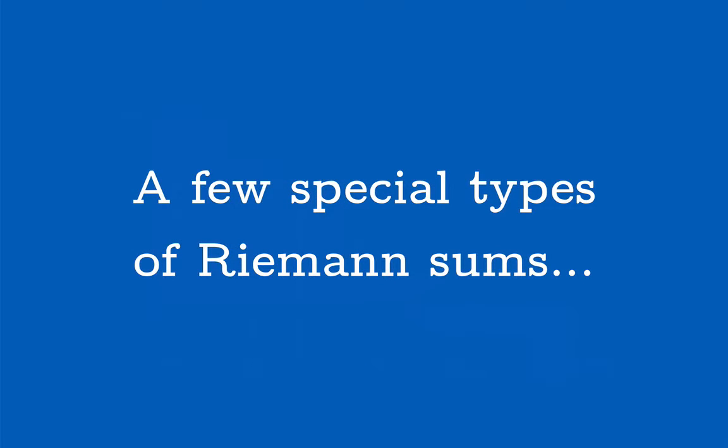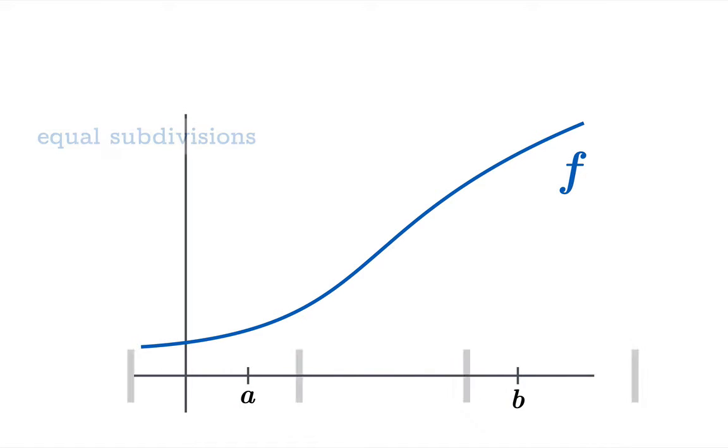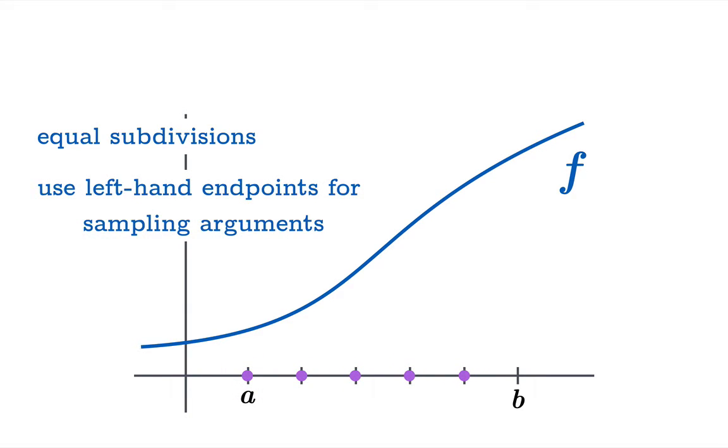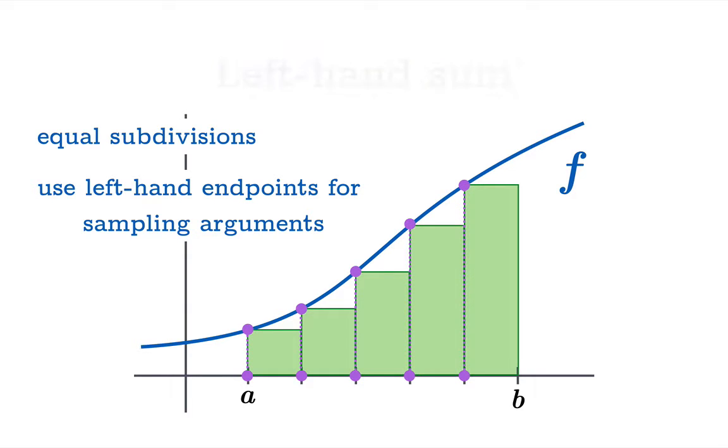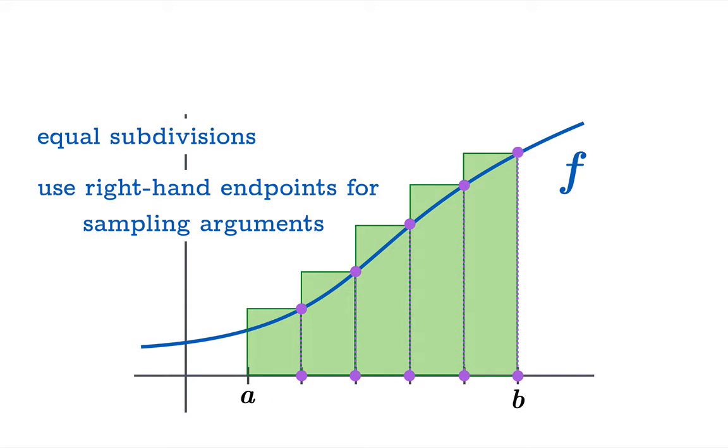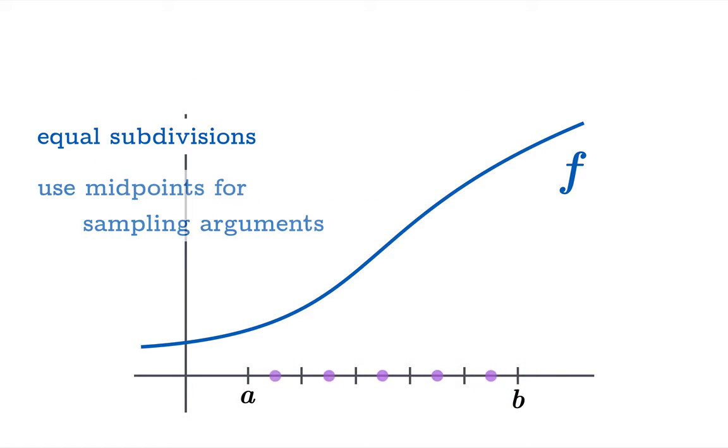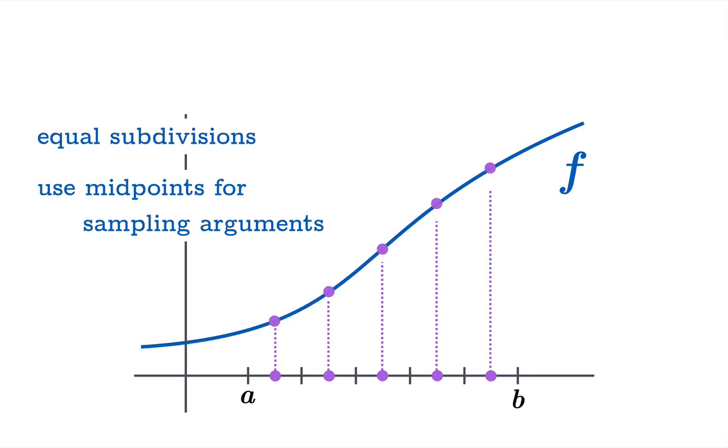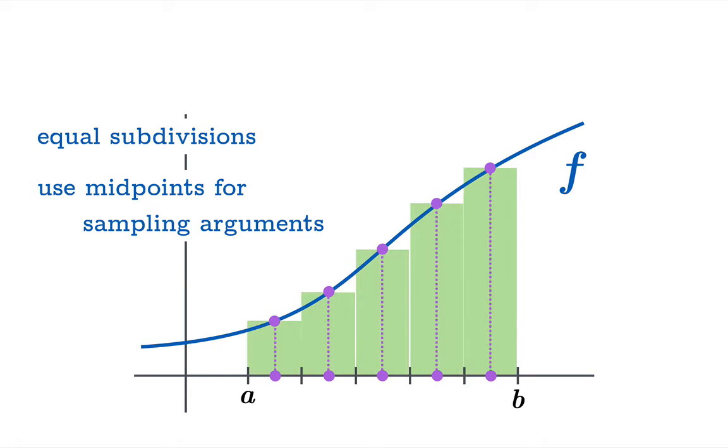Now there are a few special types of Riemann sums that you see all the time. If you use equal subdivisions and you use sampling arguments that come from the left-hand side of each interval then you get a so-called left-hand sum. And using equal subdivisions and choosing the right-hand endpoints as your sampling arguments gives you, not surprisingly, a right-hand sum. And of course there is another obvious alternative which is to use the midpoint of each subinterval and you get, not shockingly, a so-called midpoint sum.